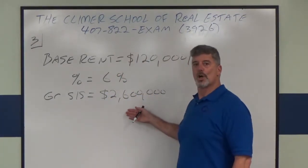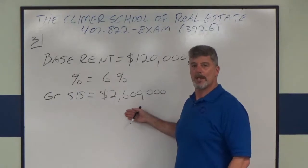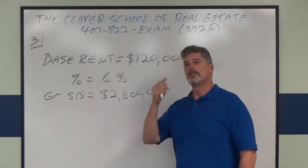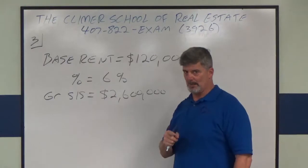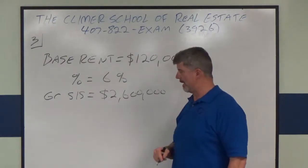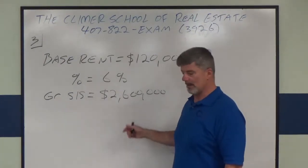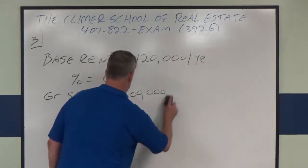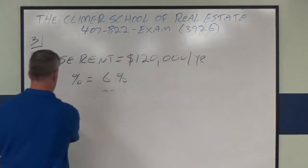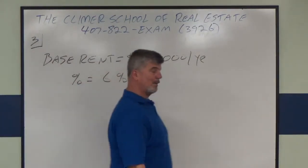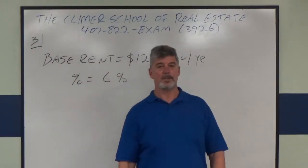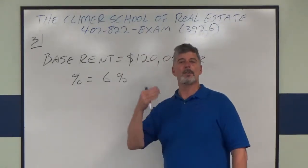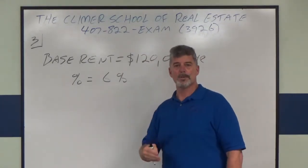The second trick is this: the gross sales number — two million six hundred thousand dollars — is meaningless garbage information. I put it there to distract you, just like the state exam is going to do, because they don't play nice. We don't need this at all, so I'm going to erase it. That was sales associate pre-license stuff.